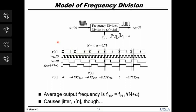Note that the divider never exactly divides by 4.75 but either divides by 4 when y[n] is 0, or by 5 when y[n] is 1. So the divider's output edges can exhibit large jitter compared to the ideal. Here, V-PLL is a square wave representing the input, and the ideal waveform is 4.75 times lower frequency. When y[n] is 0, we divide by 4, so the divider output occurs earlier than ideal. When y[n] is 1, we divide by 5. If we define tau[n] as the time difference between actual and ideal divider output, there is substantial jitter — in this case as large as 3/4 of the PLL period.